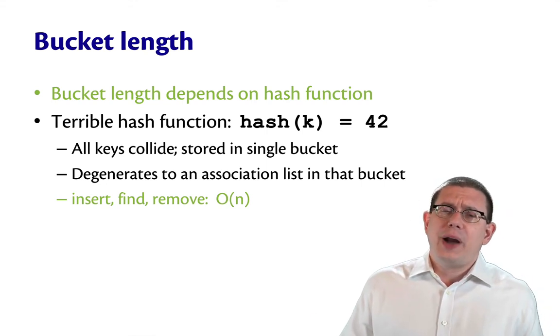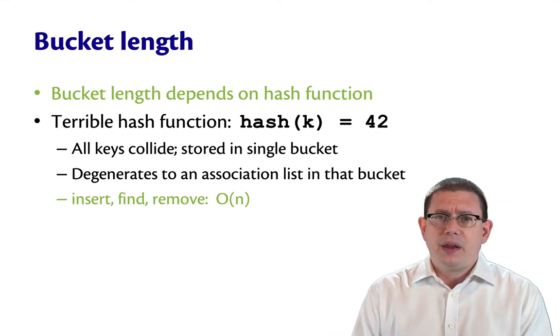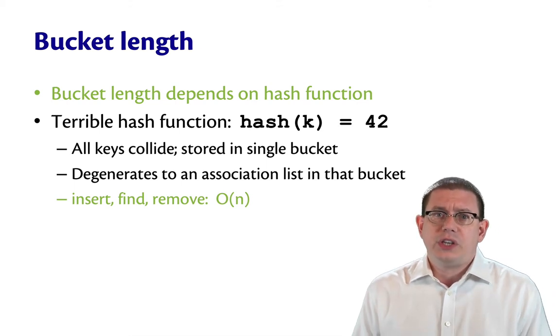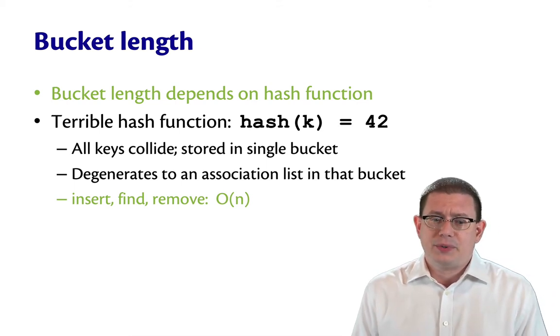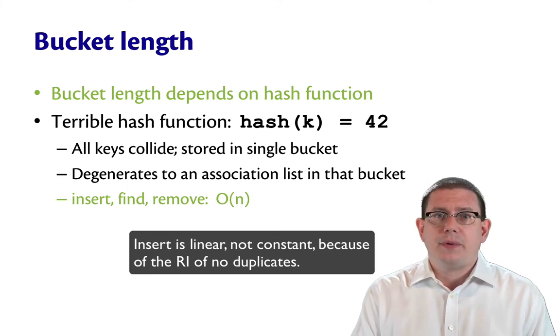In essence, we have a huge array around the bucket. All of it is empty except for that one bucket. And at that bucket, it's just an association list. So this degenerates to our association list implementation of maps. And in that case, of course, insert, find, and remove are all going to be linear time operations.